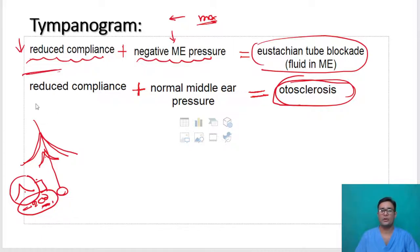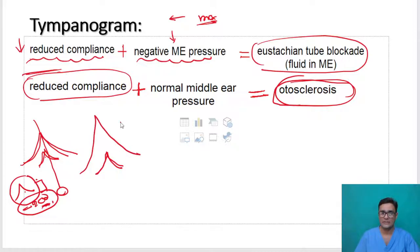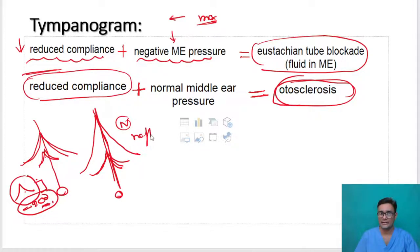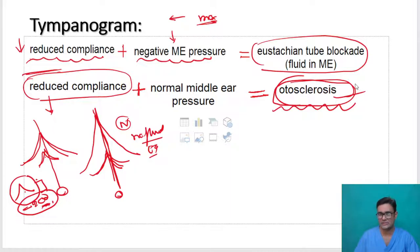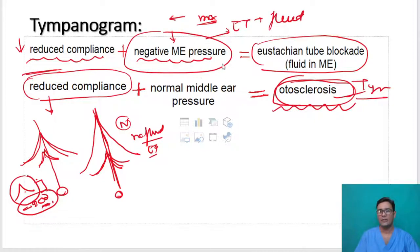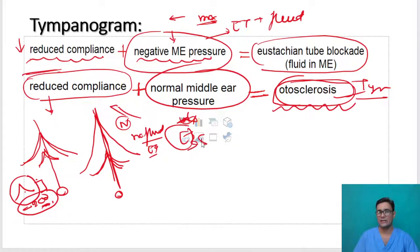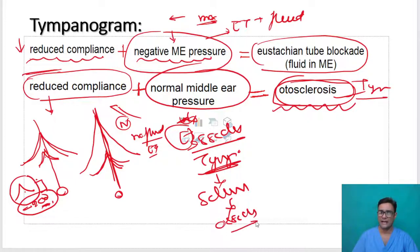The other scenario: there is reduced compliance — the ease of mobility of the tympanic membrane has reduced — but the middle ear pressure is normal. Normal middle ear pressure means the Eustachian tube is functioning normally, there is no fluid in the middle ear. But still the compliance has reduced. What can be the reason? There is ossicular fixation — it can be otosclerosis, tympanosclerosis, or any kind of ossicular fixation. Normal middle ear pressure means the Eustachian tube is normal, no fluid. The problem should be with the ossicles.